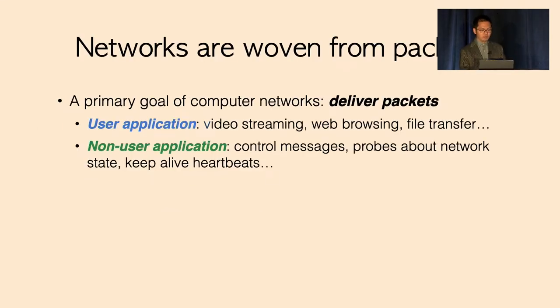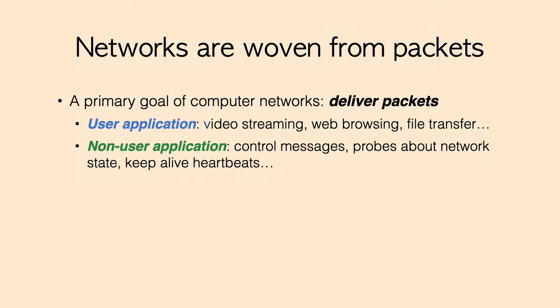As is well known, a primary goal of computer networks is to deliver user traffic among end-to-end devices. This user traffic is generated by applications including video streaming, web browsing, file transfer, and so on. At the same time, there's also non-user traffic which carries control messages, probes about network states such as link utilization, keepalive heartbeats about failure detection, and so on.